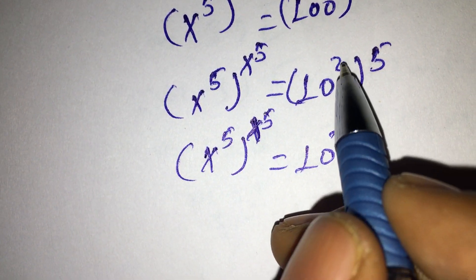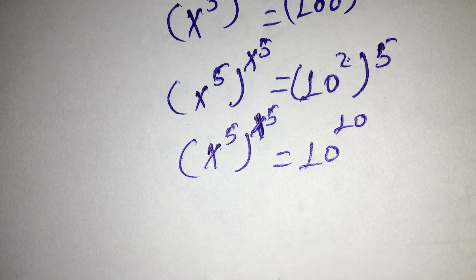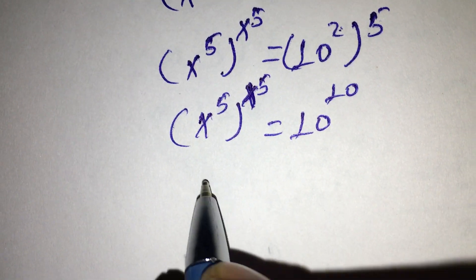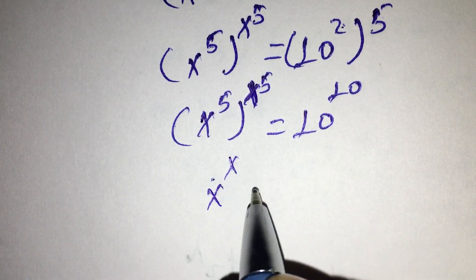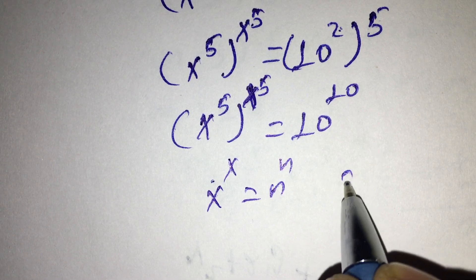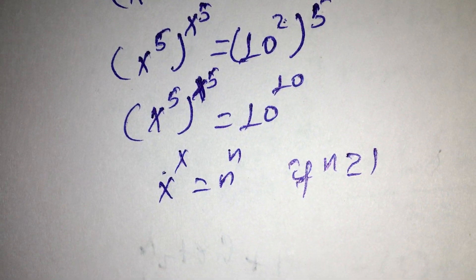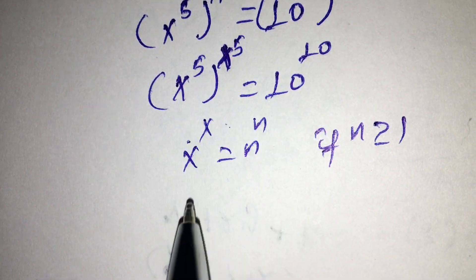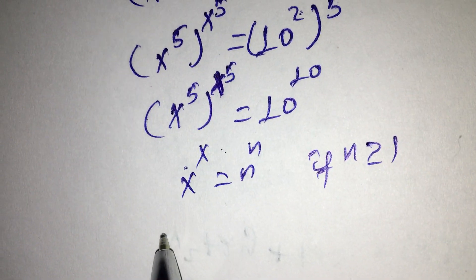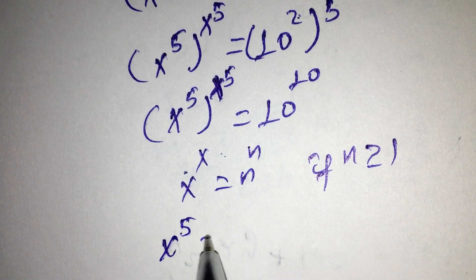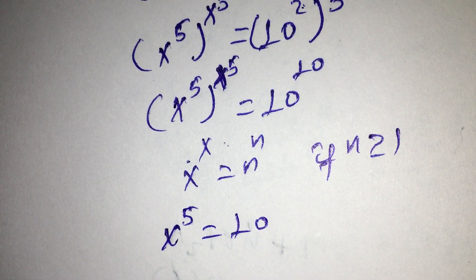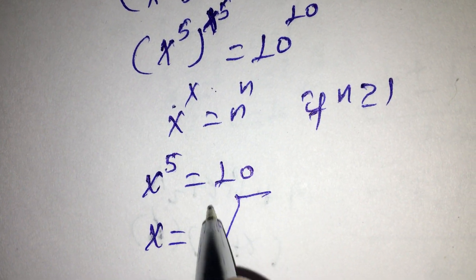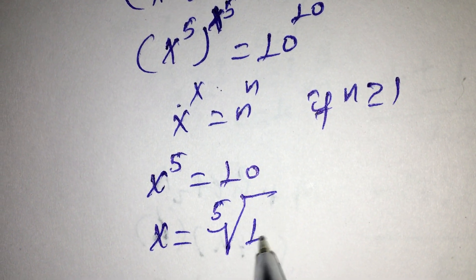Next, x to the power of x equals n to the power of n, if n is greater than or equal to 1. So here our equation gives x to the power of 5 equal to 10. Therefore, x equals the 5th root of 10.